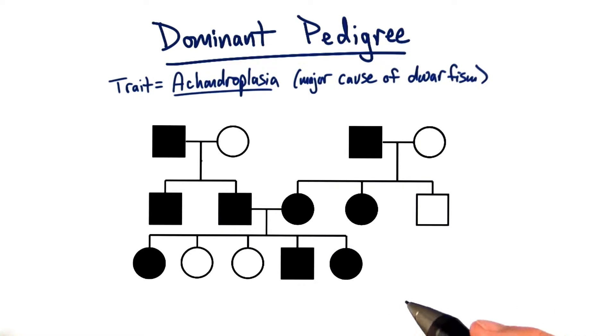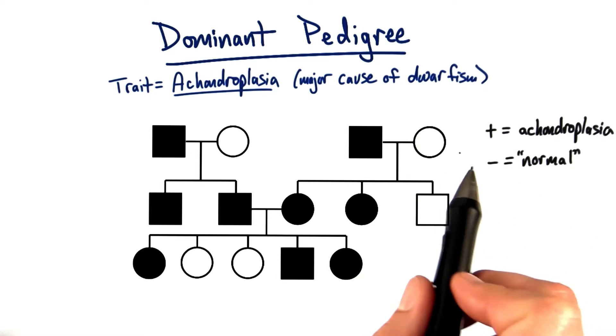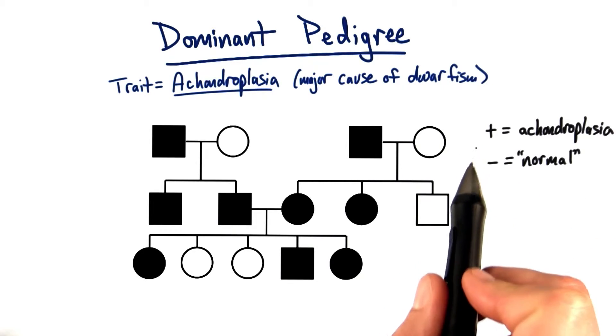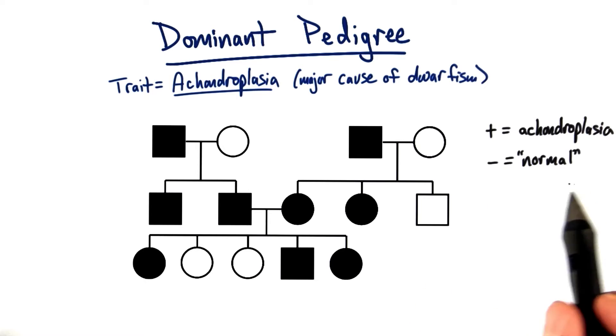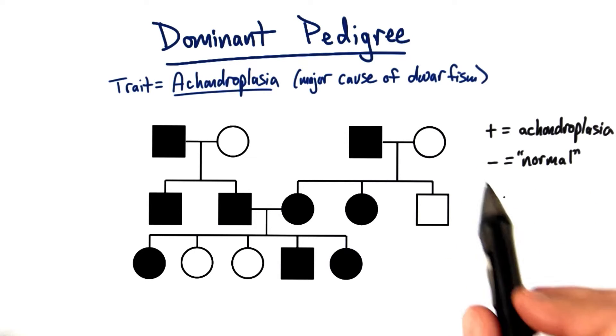Now, at this point in the course, we haven't talked about any specific genetic alleles that cause achondroplasia. But we can go back to using our symbols like we used for lactose intolerance — the plus and the minus.